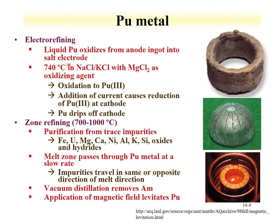Electro-refining is a process where plutonium is formed into a metal in a molten salt system. Liquid plutonium oxidizes from an anode ingot into an electrolyte salt that is at elevated temperature above the melting point of plutonium. The plutonium(III) ion goes to the cathode where reduction occurs, the plutonium metal melts and drips off the cathode into a criticality-safe shape, such as the ring shown here.